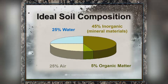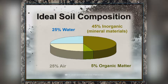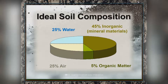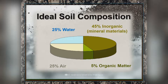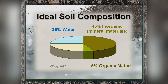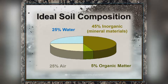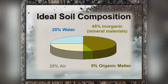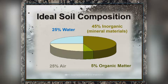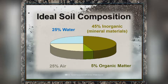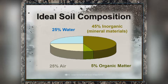Soil is made up roughly of about 45% inorganic minerals — that's just ground up rock, which is sand, silt, and clay. Your sand breaks down into silt, and silt breaks down into clay. The other solid portion is your organic matter, that's about 5% in a really good soil. About 50% of a soil is actually just pore space, made up of about 25% water and 25% air.